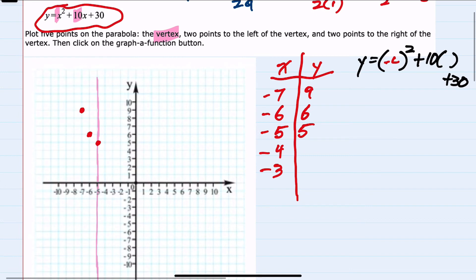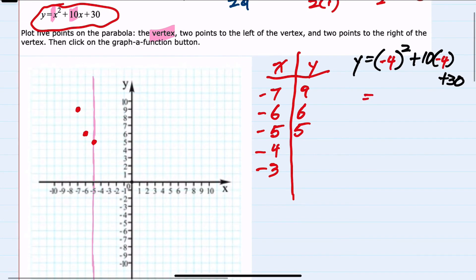Two more points to plug in here. We'll next use negative 4. Negative 4 squared would be 16, 10 times negative 4, minus 40, plus 30. 16 minus 40, negative 24, plus 30, gives us 6. So negative 4, 6.